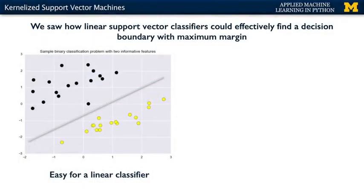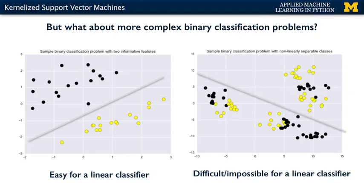We saw earlier how linear support vector machines served as effective classifiers for some datasets by finding a decision boundary with maximum margin between the classes. Linear support vector machines worked well for simpler kinds of classification problems where the classes were linearly separable or close to linearly separable, like this example on the left. But with real data, many classification problems aren't this easy, with the different classes located in feature space in a way that a line or hyperplane can't act as an effective classifier.